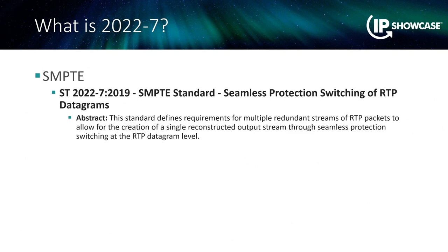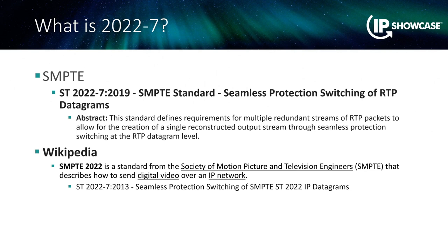If you would prefer, the Wikipedia description is a standard that describes how to send digital video over an IP network. While both don't sound that exciting, what that means to us is that we can use low-cost connections to deliver the data that represents video without the requirement for engaging in expensive, high-cost contracted connections.